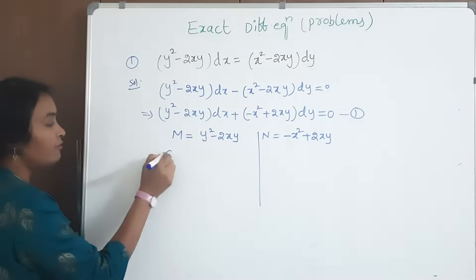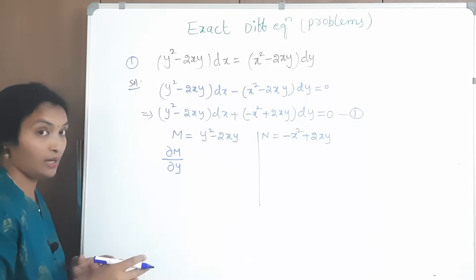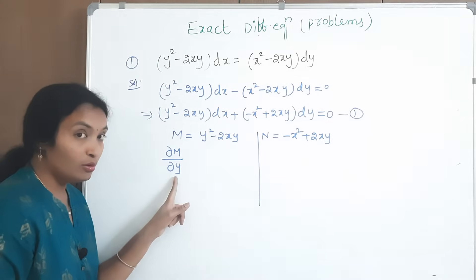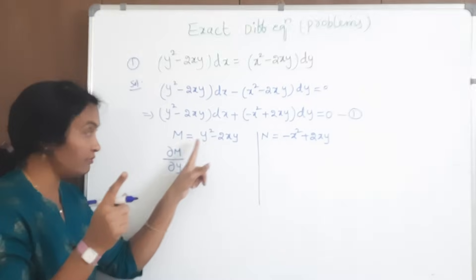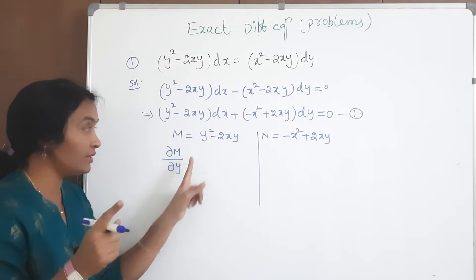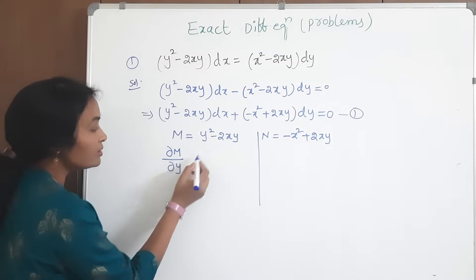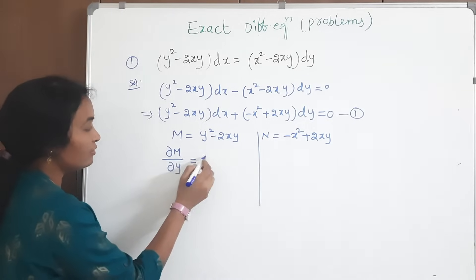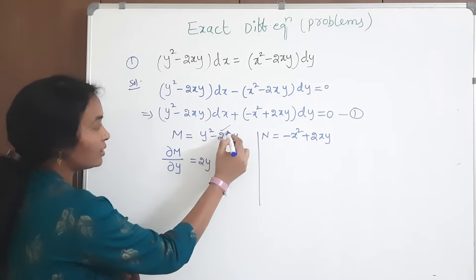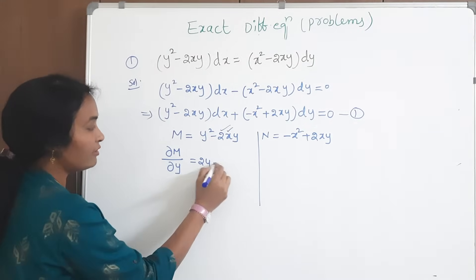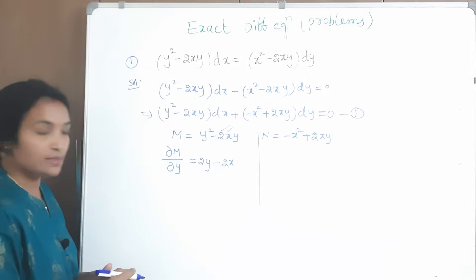Differentiate M partially with respect to y. If you do partial differentiation with respect to y, single y terms will change; any pure x terms will become 0. Here, differentiating y² gives 2y. The coefficient 2x is constant, so differentiating minus 2xy with respect to y gives minus 2x. Therefore ∂M/∂y = 2y minus 2x.